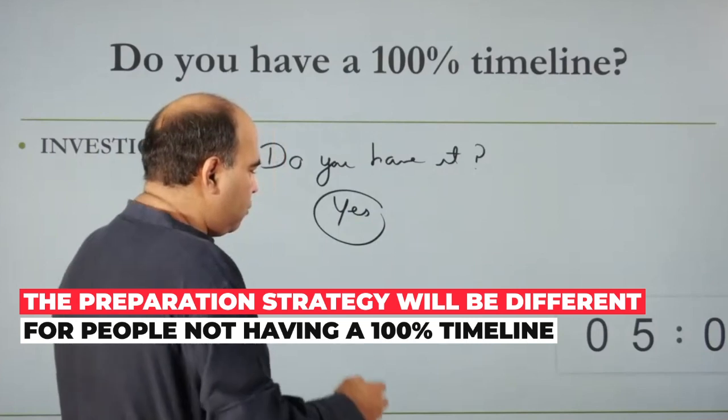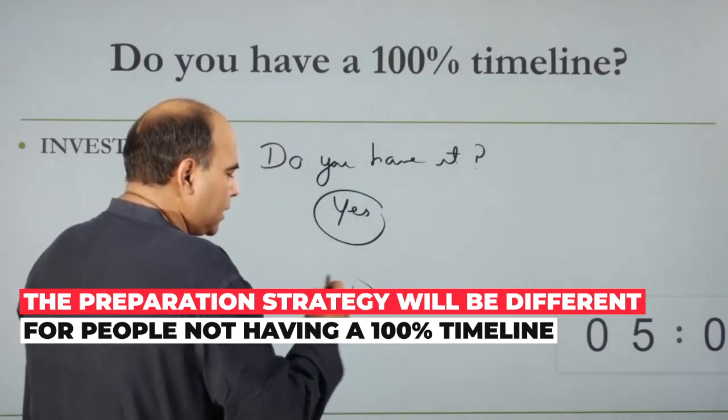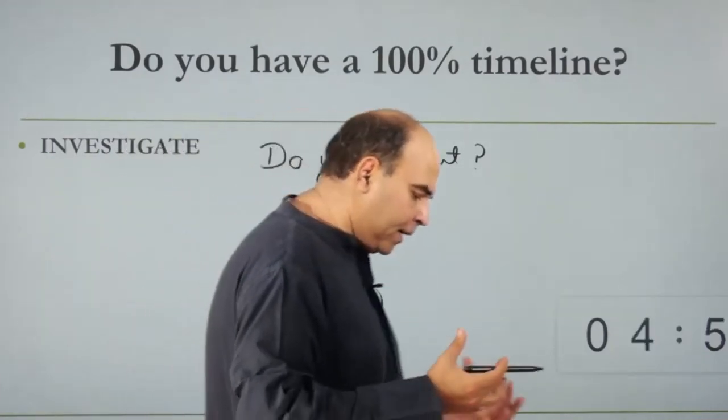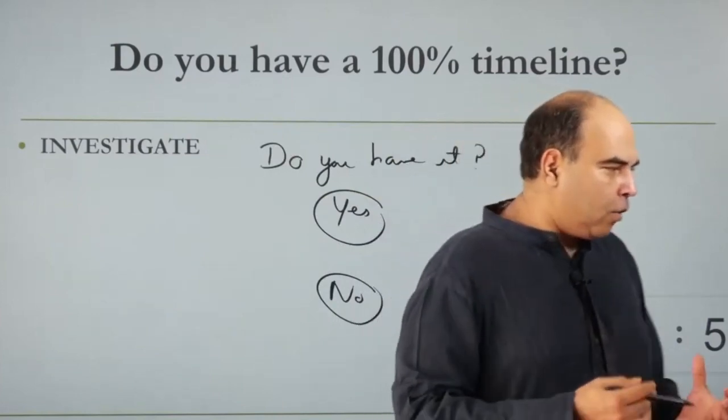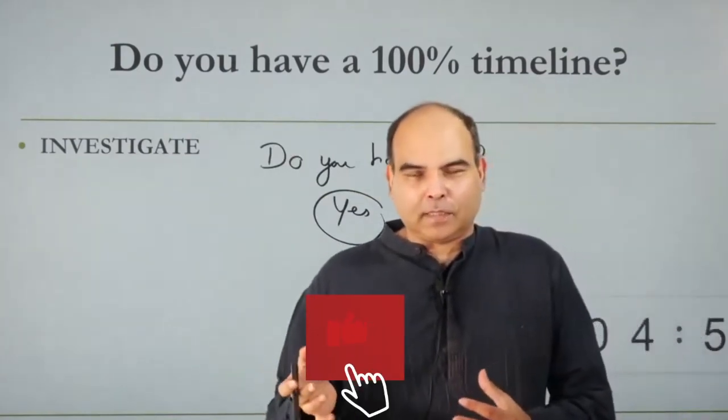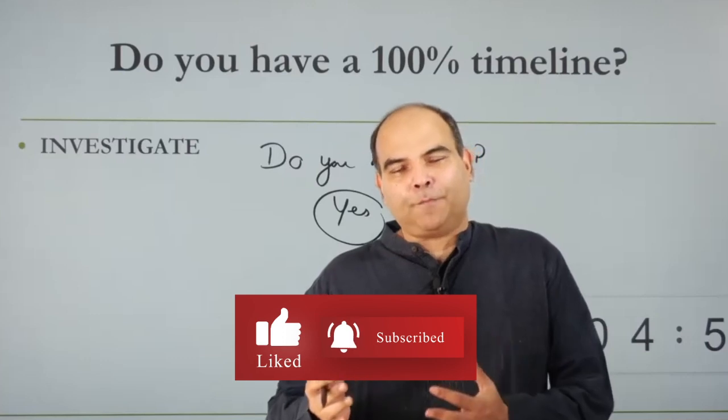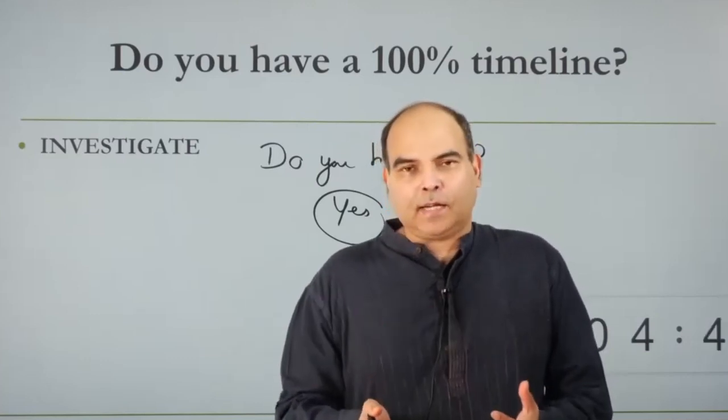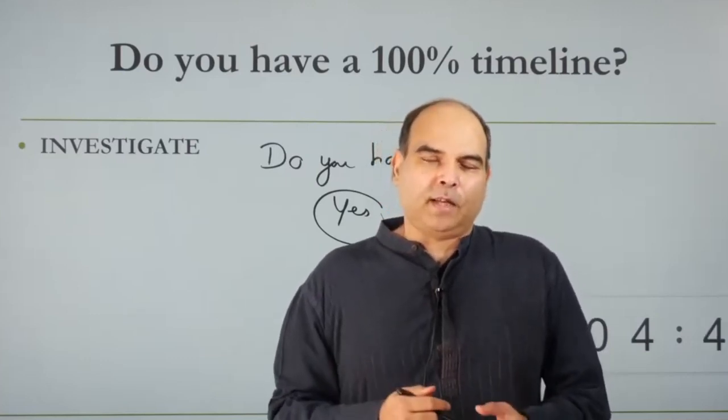That means if you pick up a reading comprehension passage, and on average you pick up five, seven, ten passages from various areas and you try to give them unlimited time for yourself, and you realize that you're not able to get more than 70-80% correct even if you have unlimited time...